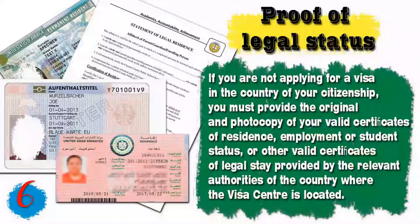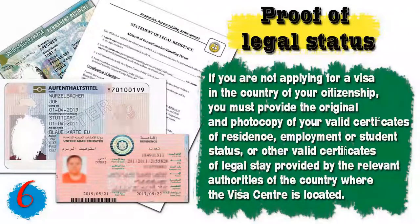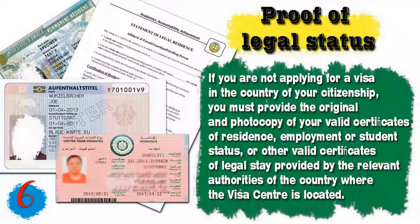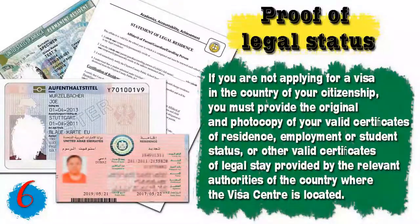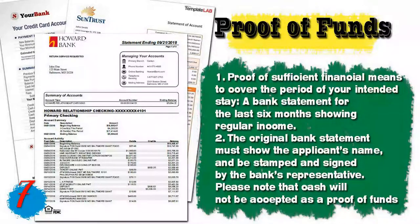If you are a student, an enrollment letter from your school or college should be provided. Number six, for foreigners: if you are not applying for a visa in the country of your own citizenship, you must provide the original and photocopy of your valid certificate of residence, employment, or student status, or other valid certificates of legal stay provided by the relevant authorities of the country where the visa center is located.